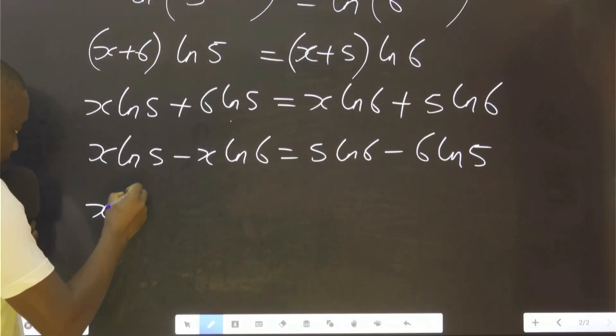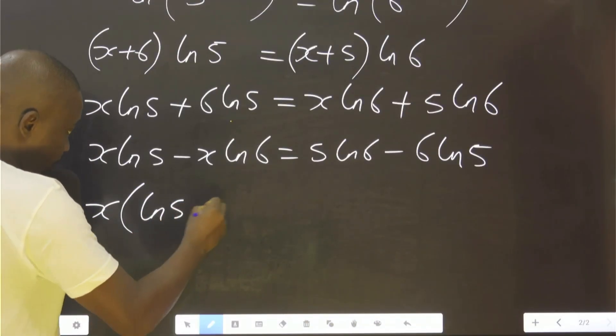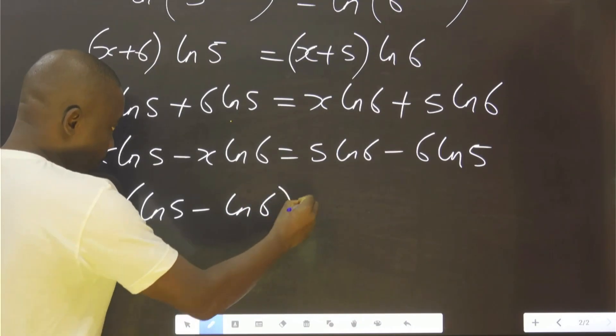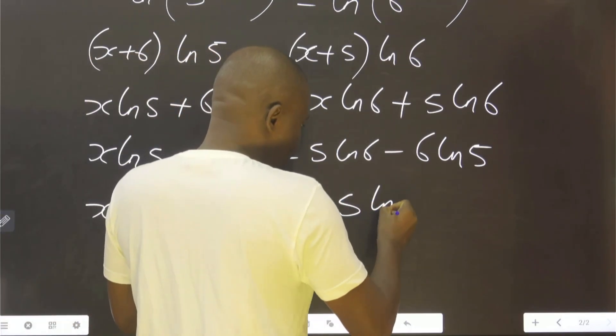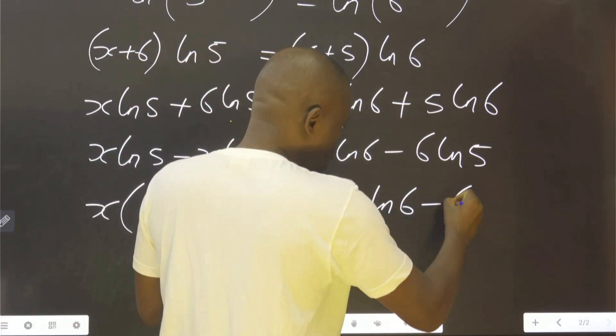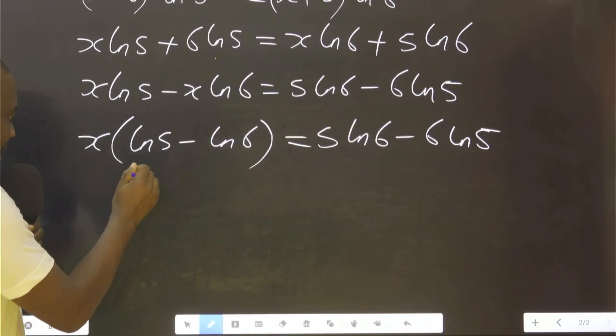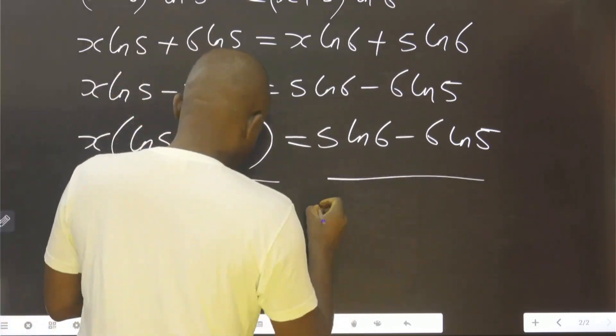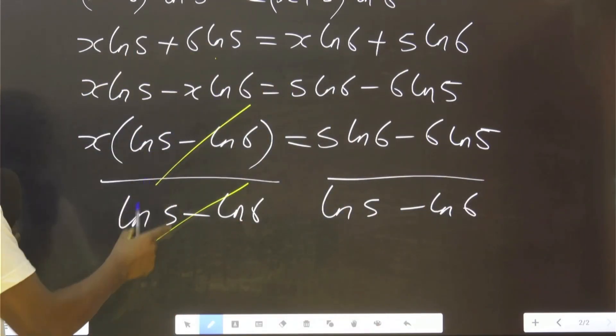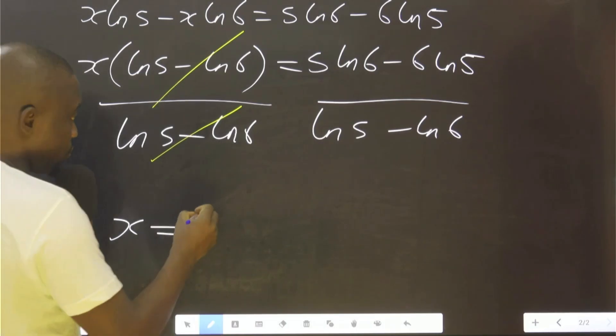Okay? Let's divide both sides by this. So, this and this will cancel. x, therefore, is equals to.